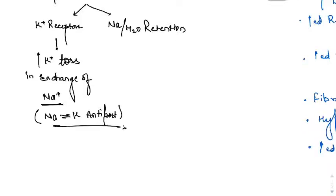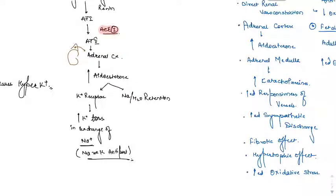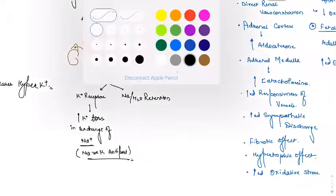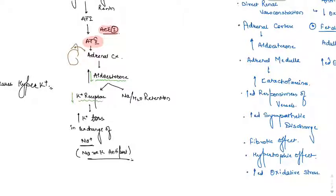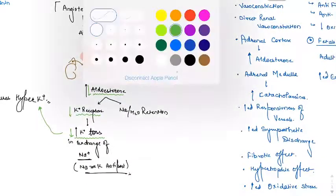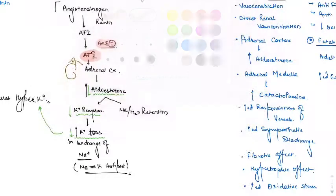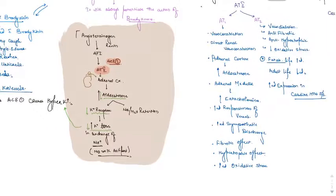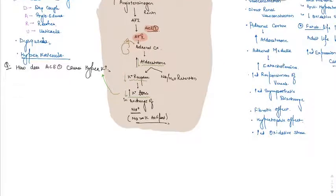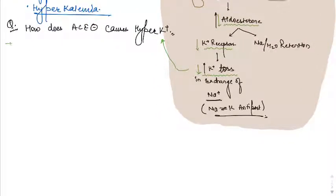When we give an ACE inhibitor, angiotensin 2 levels fall, aldosterone secretion decreases, and potassium is no longer excreted in exchange for sodium. This leads to hyperkalemia. Therefore, ACE inhibitors act as indirect aldosterone antagonists, indirectly inhibiting aldosterone secretion.